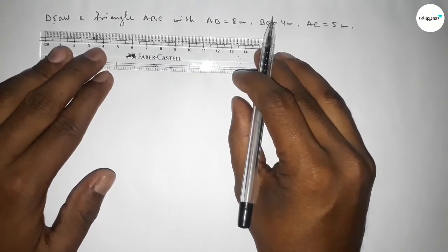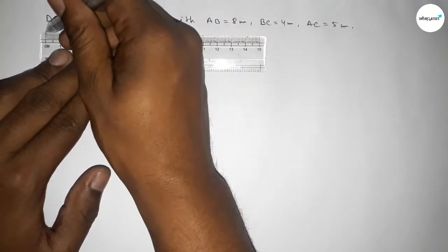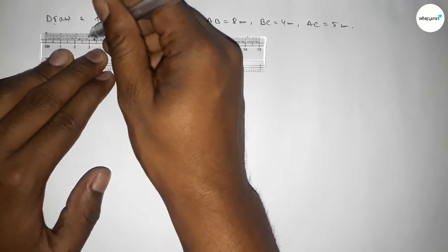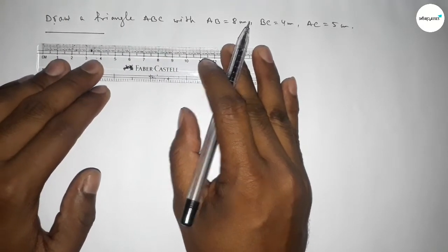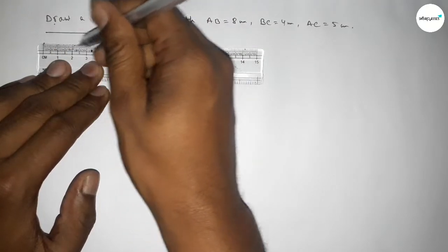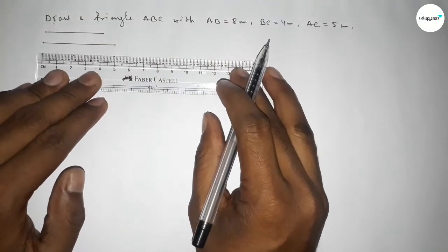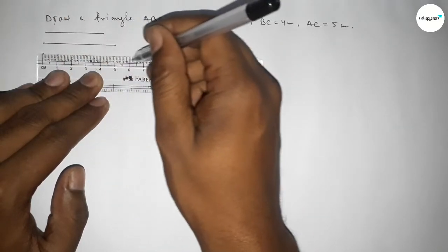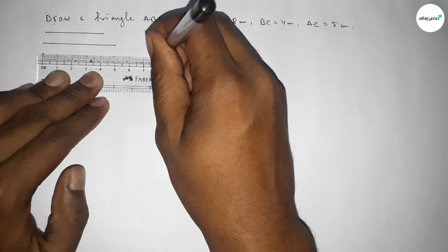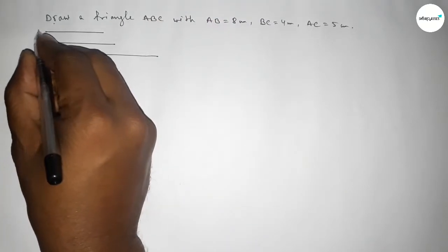First of all, we have to draw a line of length 4 centimeter. This is 4 centimeter. Then drawing another line of length 5 centimeter — starting at zero, this is 5 centimeter. And last, drawing a line of length 8 centimeter. This is 8 centimeter.